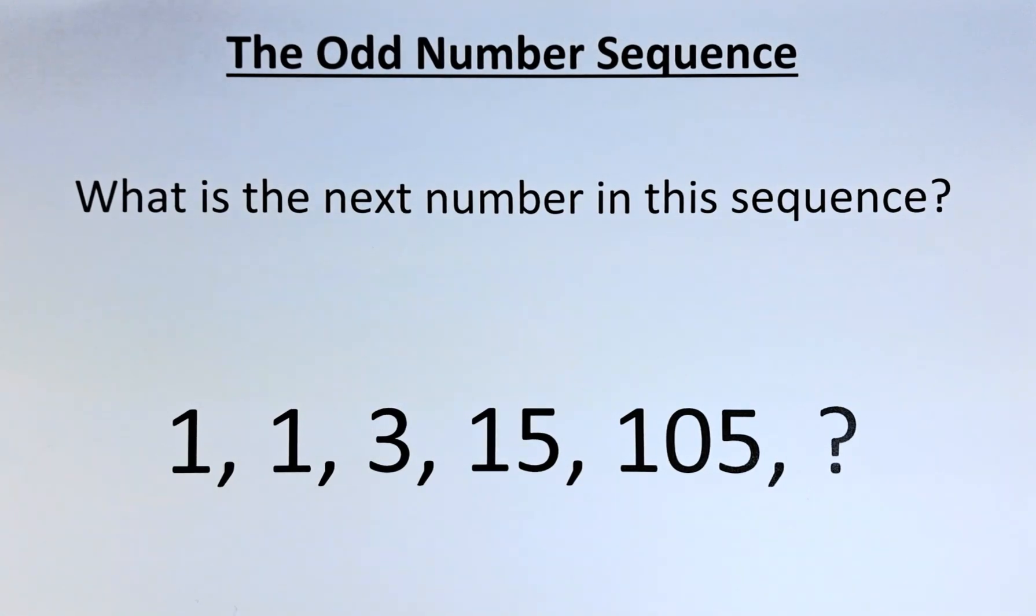Welcome back to this odd number sequence. The numbers in the sequence are as follows. It starts with 1, followed by another 1, and then it is 3, 15, and 105. So what is the next number after 105?